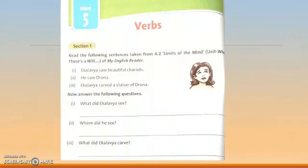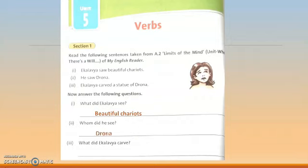Now come to the chapter on Verbs, Section 1. Read the following sentences taken from the unit in your English reader. First: 'Eklavya saw beautiful chariots.' Number 2: 'He saw Drona.' Number 3: 'Eklavya carved a statue of Drona.' Now answer the following questions. What did Eklavya see? Very easy — beautiful chariots. Whom did he see? Drona. What did Eklavya carve? A statue of Drona.